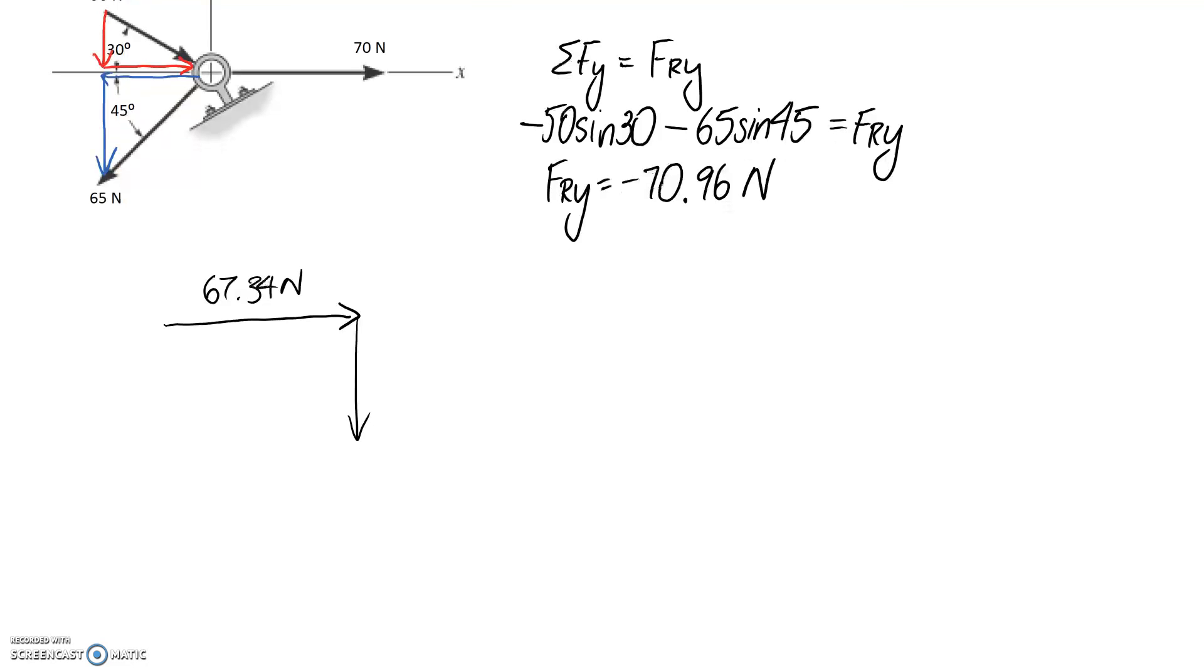This is a size of 70.96 newtons downwards. Now we just need to figure out the overall resultant, which is when we join these together, and let's call this FR.